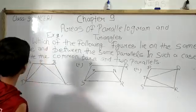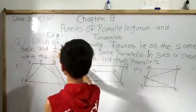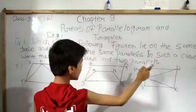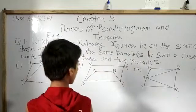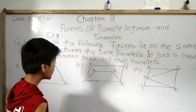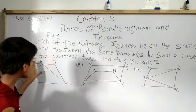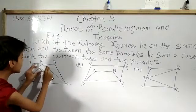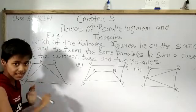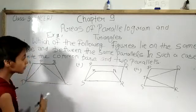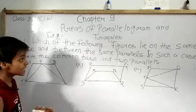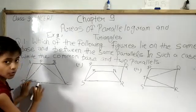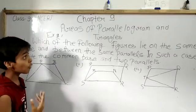Question number one is asking: which of the following figures lie on the same base and between the same parallels? In such a case, write the common base and the two parallels. So the question is asking us to look at given figures — generally two quadrilaterals have been given to us — and we have to tell whether both quadrilaterals lie on the same base, and whether they lie between the same parallels. Later we have to write the name of the common base and the two parallels.